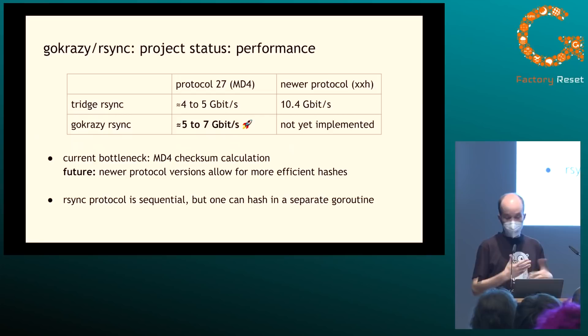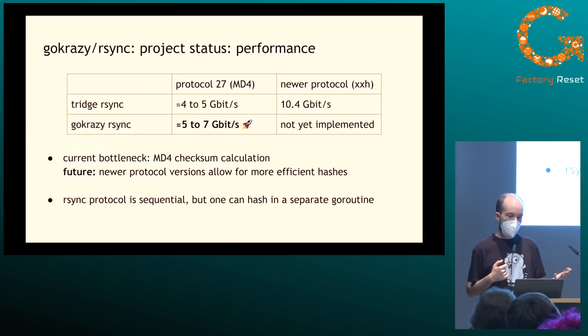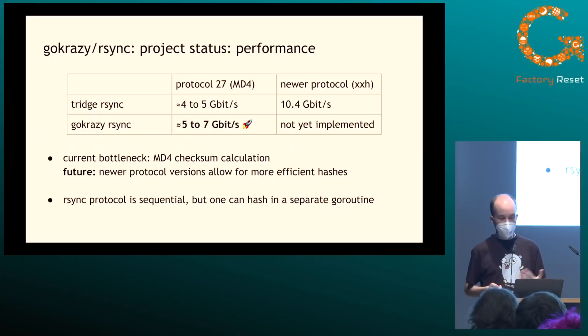Tridge rsync didn't stop at protocol 27. One cool feature of newer protocol versions is that they can negotiate which hash algorithm to use, and they default to the xxHash algorithm which is much more modern and faster. With that you can reach 10.4 gigabits with tridge rsync — I tested it on a 25 gigabit line, so it's really achieving 10 gigs and no more. We haven't been able to test how good go-crazy rsync would be in that situation since we don't yet implement the newer protocol versions.